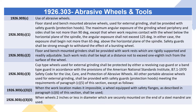1926.303(c)(1): Floor stand and bench mounted abrasive wheels used for external grinding shall be provided with safety guards (protection hoods). The maximum angular exposure of the grinding wheel periphery and sides shall be not more than 90 degrees, except that when work requires contact with the wheel below the horizontal plane of the spindle, the angular exposure shall not exceed 125 degrees. In either case, the exposure shall begin not more than 65 degrees above the horizontal plane of the spindle. Safety guards shall be strong enough to withstand the effect of a bursting wheel.